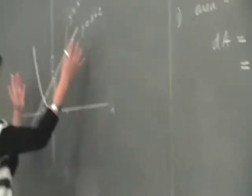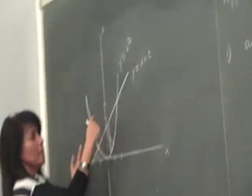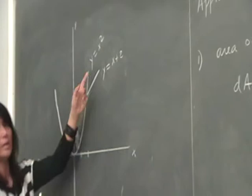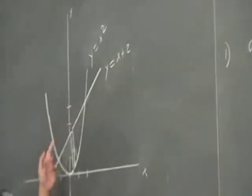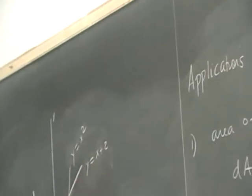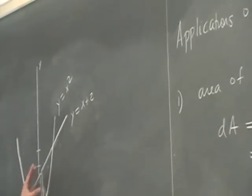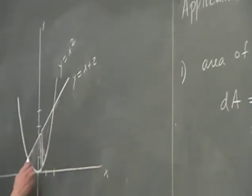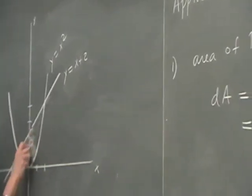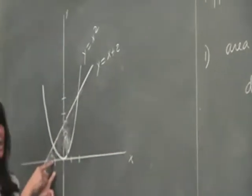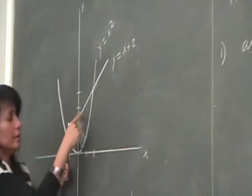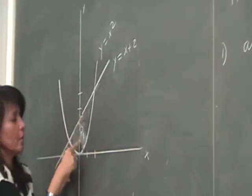Here is a typical example where we have a parabola and a line. The parabola is y equals x squared. The line is given by y equals x plus 2. We want to find areas of certain regions — in particular, region 1 and region 2. Let's look at the first problem: finding the area of region 1.